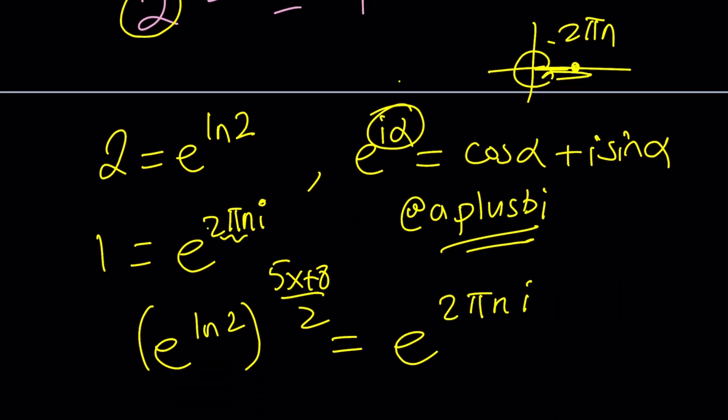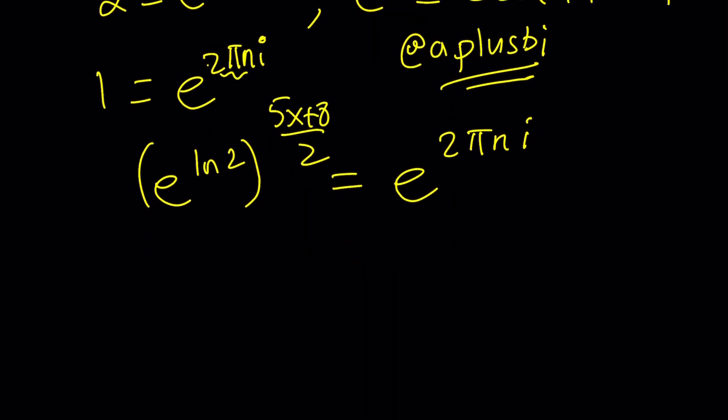But aren't I supposed to write 2 as a complex number? Well, here's the thing. If you write e to the power ln 2, then this should give you the value you're looking for. So let's continue.